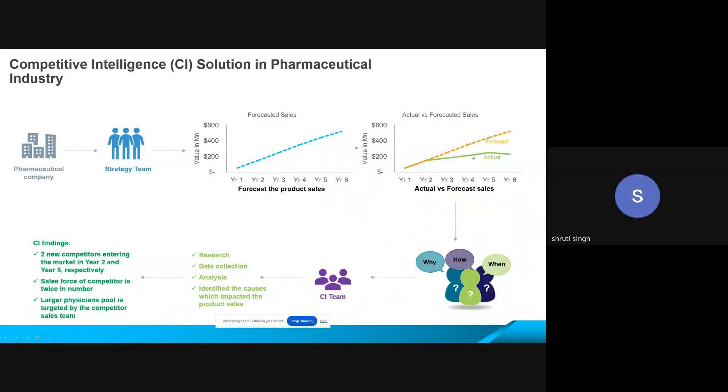So there is a dip in year two. Again there was a slower growth because there was another player into the market that entered, and around in year five there was another decline that happened again because of the competitor entry. Now apart from this, the competition that entered into the market invested a lot into the promotional activities around the product. So they had a bigger sales representative or on-ground medical representatives. They were able to reach to higher number of physicians for their products.